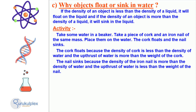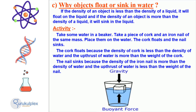Objects with different physical properties will behave differently when placed in water. The denser an object is relative to the water it is placed in, the more likely it is to sink. On the contrary, an object with a lower density than the water it is placed in will tend to float. To illustrate this, let's consider two objects of the same mass: a piece of cork and an iron nail. When placed in a beaker of water, the cork will float because its density is lower than that of the water. The iron nail will sink due to its greater density compared to the water. The upthrust of the water, which is the buoyant force that pushes the objects upwards, is proportional to the density of the object and less than the weight of the iron nail, thus causing it to sink.